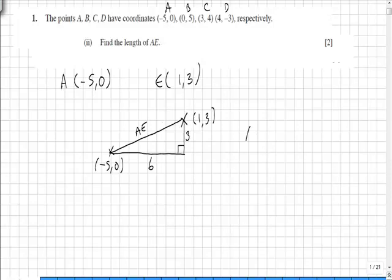So using Pythagoras theorem, we can say that AE squared is equal to 6 squared plus 3 squared. So AE squared is equal to 36 plus 9. AE squared is equal to 45, giving AE equal to the square root of 45.